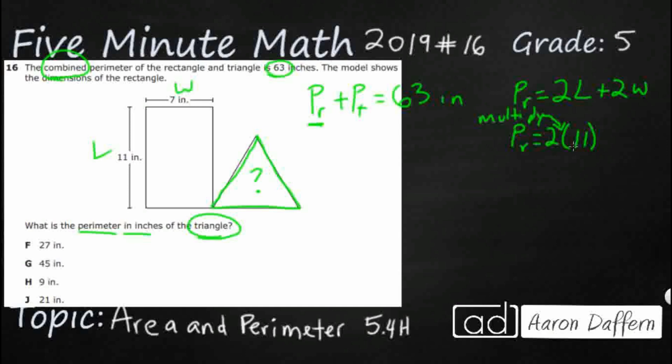And then we're going to add double the width. Two times seven, which is just the same as, you know, taking your seven inches from the top, putting it at the bottom, your 11 inches from the side, putting it to the other side, and then adding all four sides. You can either add all four sides, or you can double each side that's different, and then add those two products.